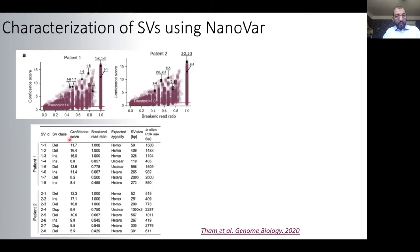We have picked up a few of them according to different zygosity scores and different confidence scores. The output includes the class of the SV, the confidence score, the breakend ratio, the interpretation of the breakend ratio which would be the expected zygosity, and the structural variant size.